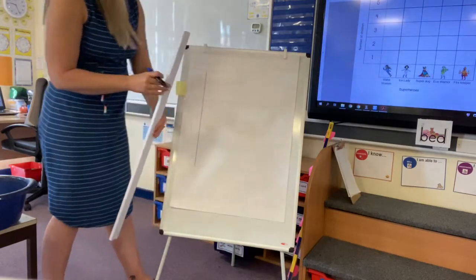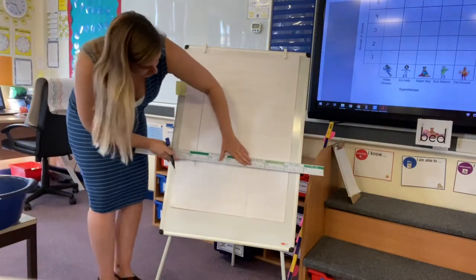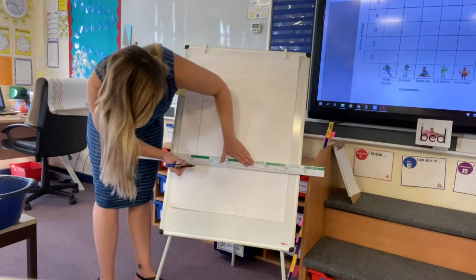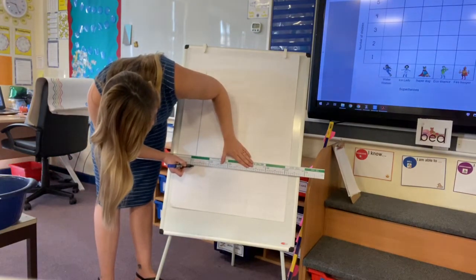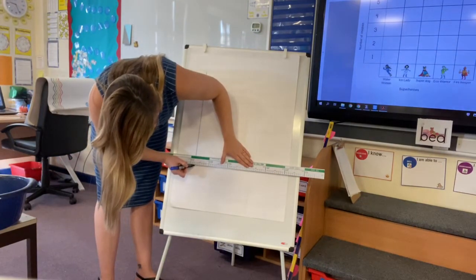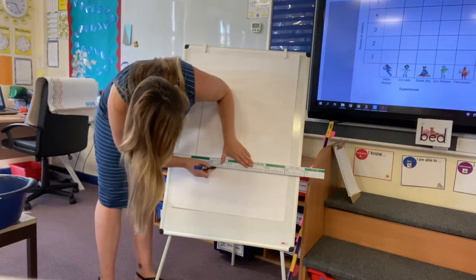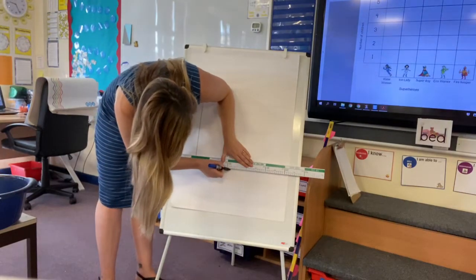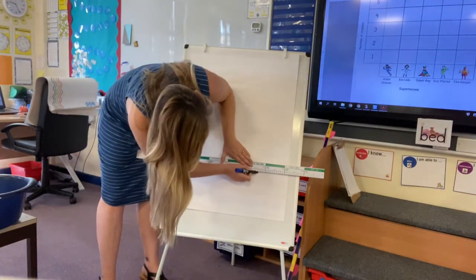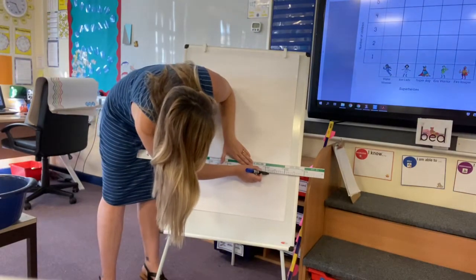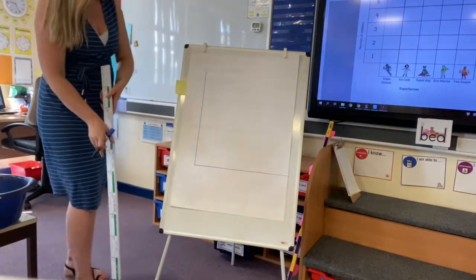I'm just going to fit mine in at the bottom. Because we're doubling up this time, each category is going to get two squares. So we count across ten squares. Fantastic.